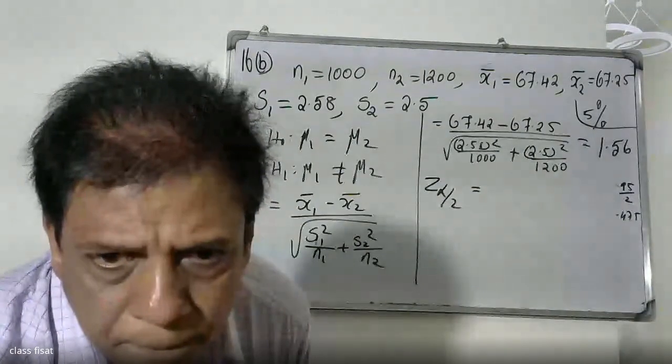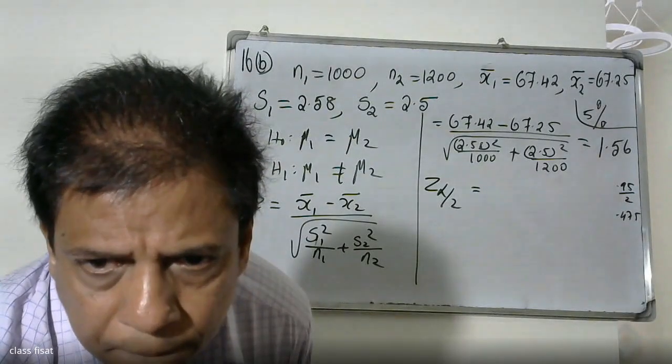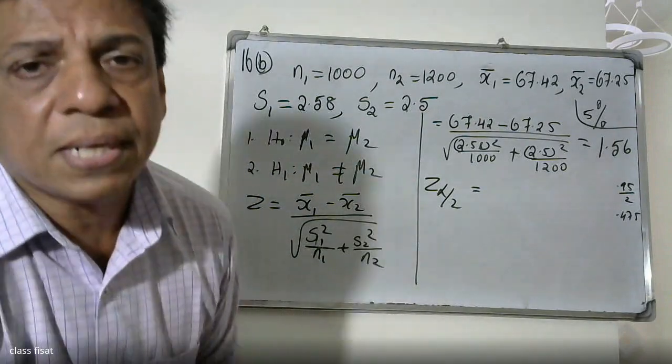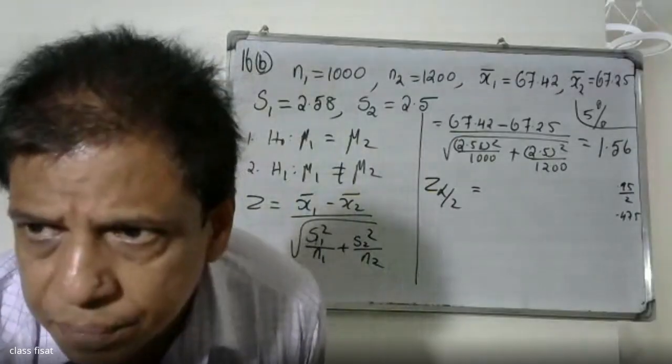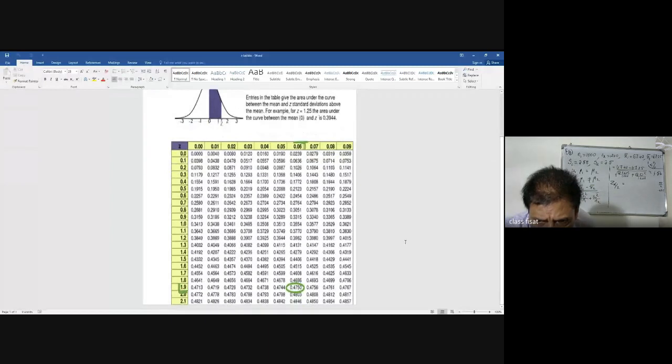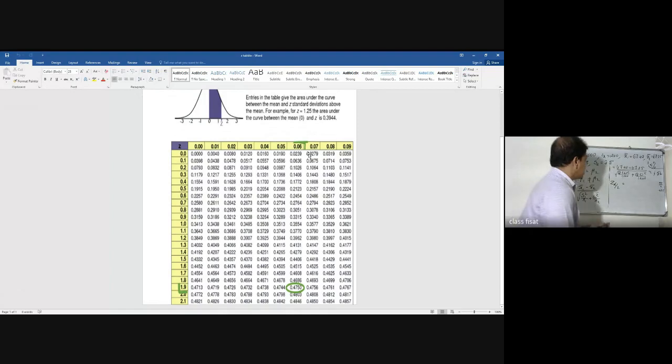This is the table. This table is 0.475. The value from the table is 1.96.